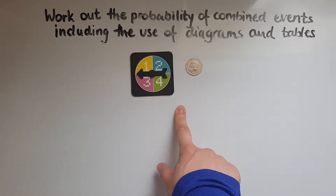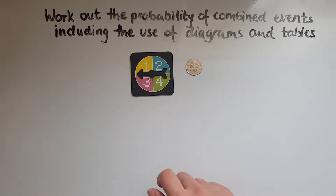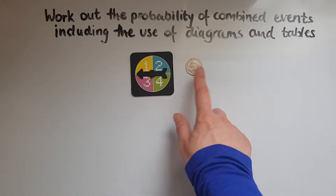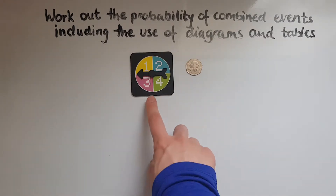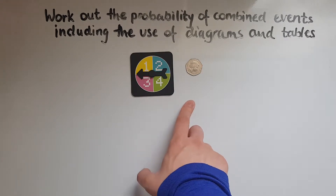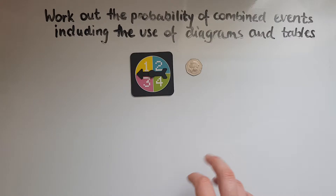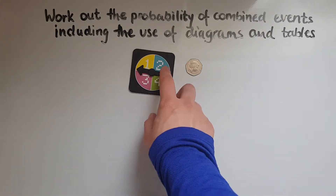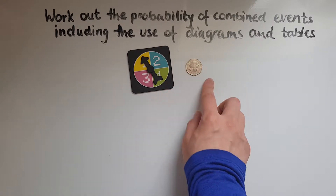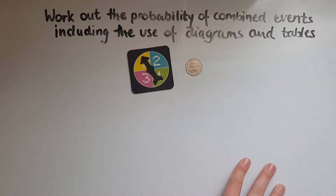For example, what's the probability of getting a three and tails? Or two and heads? What we're looking at is independent events, because combined events can be dependent or independent. These are independent because whatever you get with the spinner does not impact what you get with the coin. We'll look at dependent events later on.